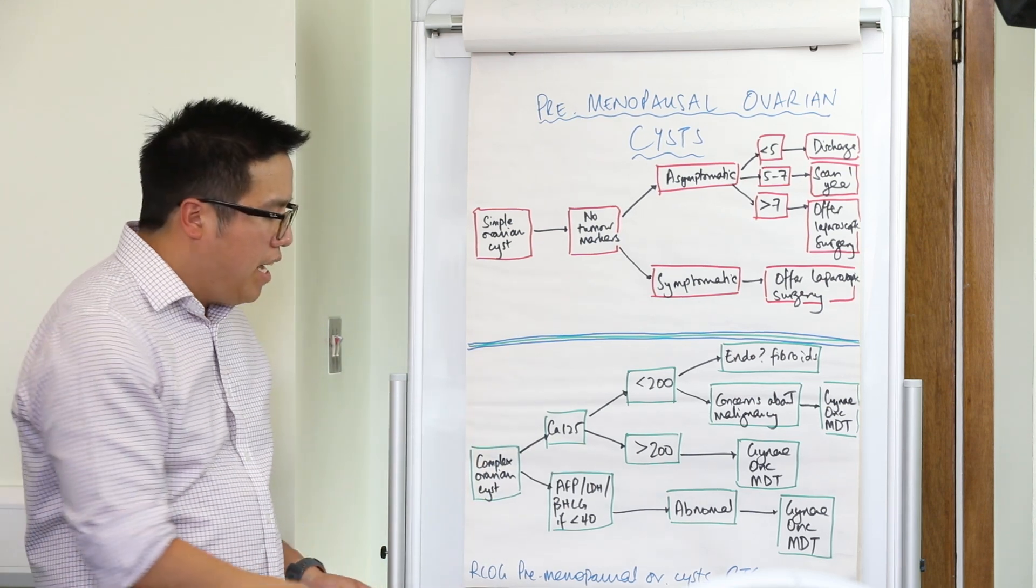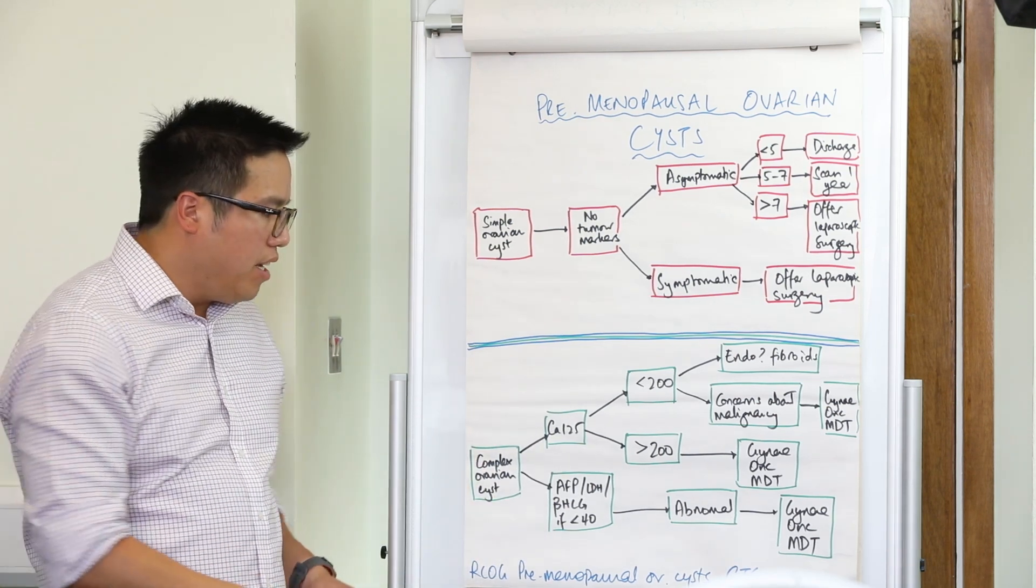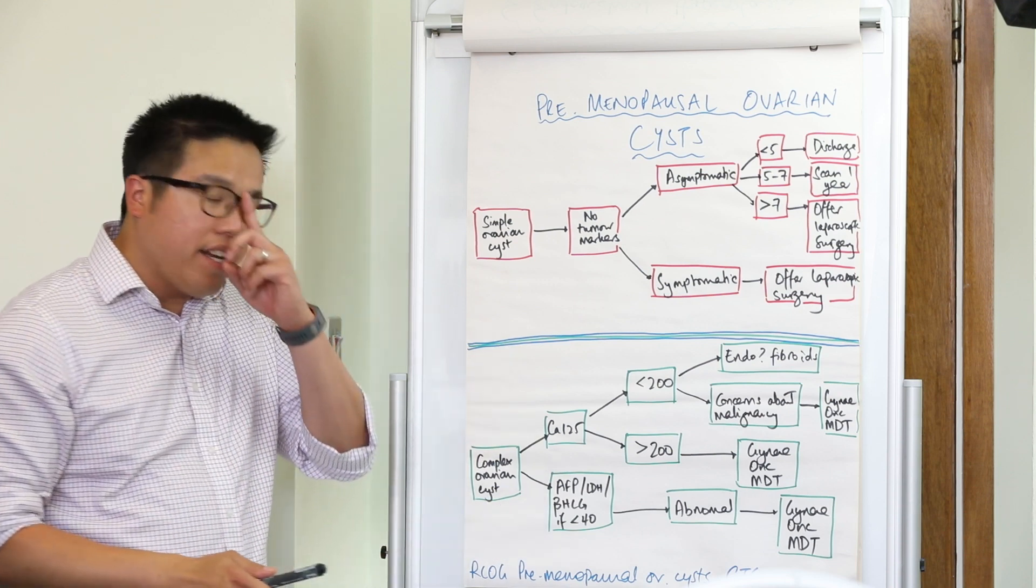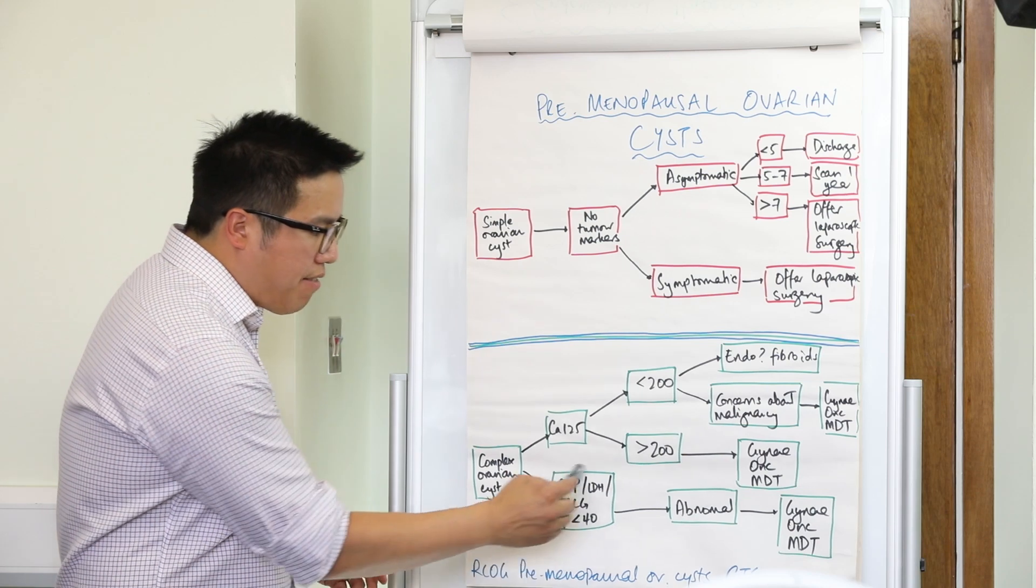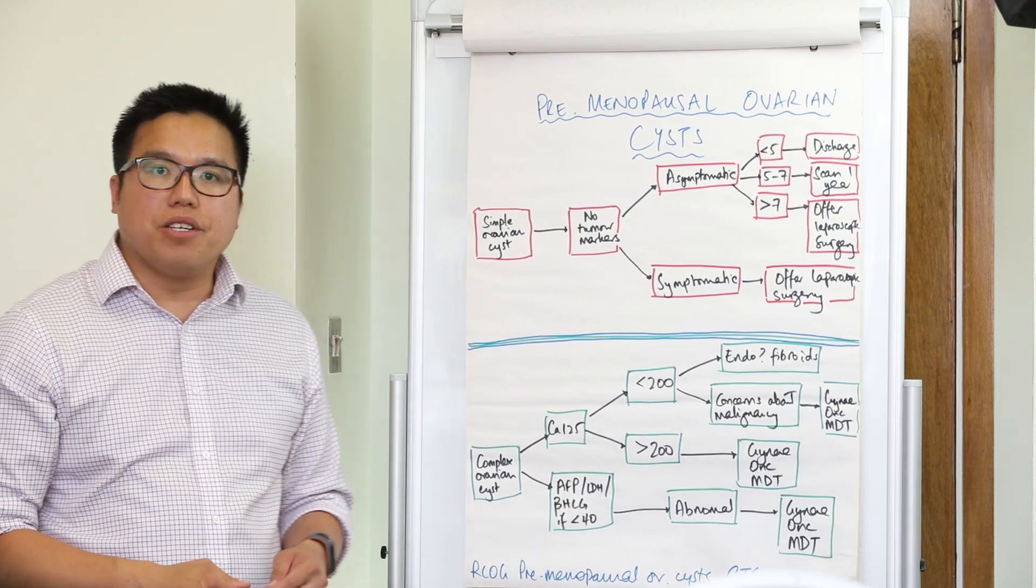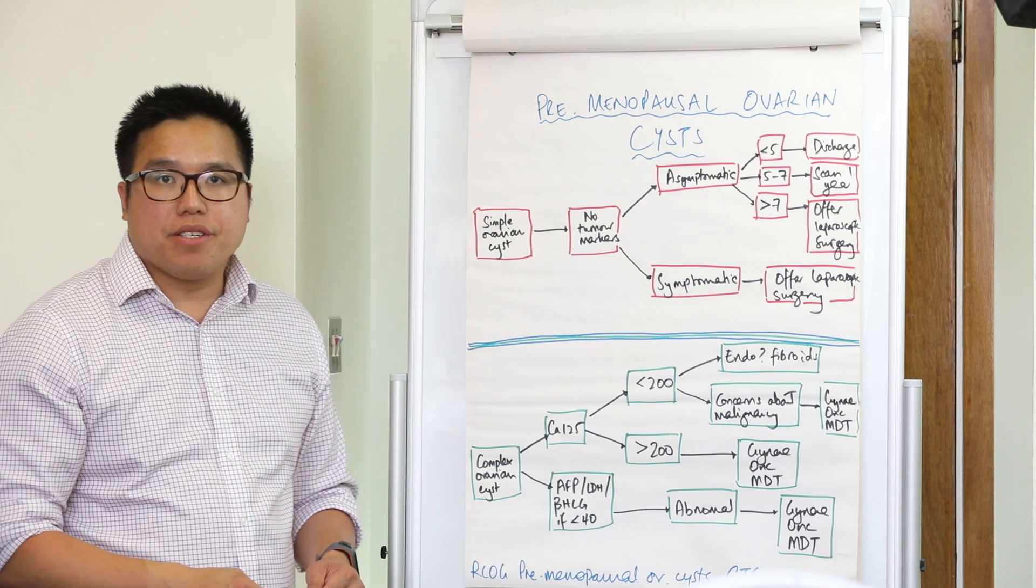The first is CA125, and if they're less than 40, we're going to do an alpha-fetoprotein, an LDH, and also beta-HCG, and these three hormones really are looking for sex cord tumours or dysgerminomas.